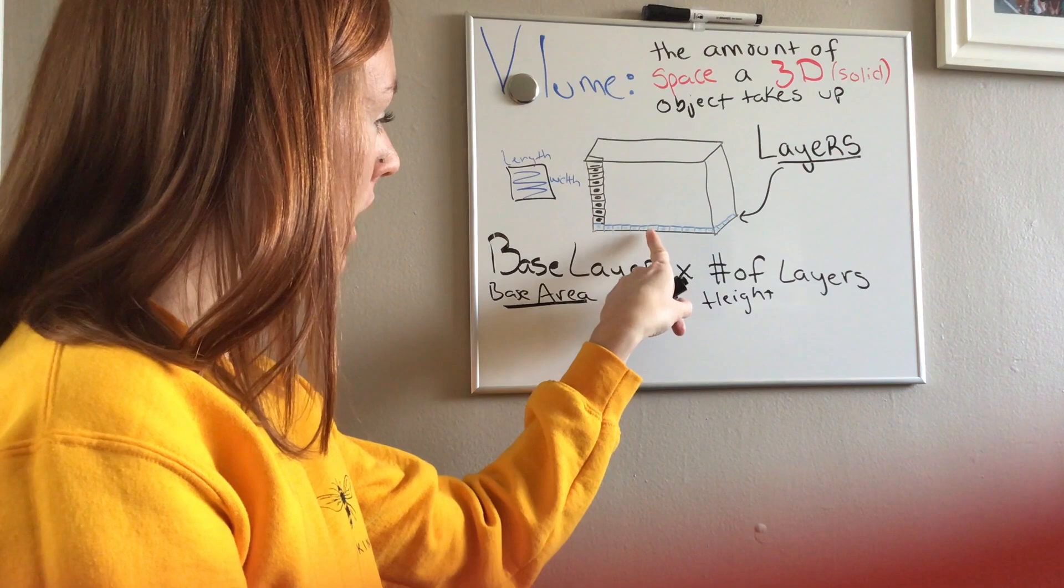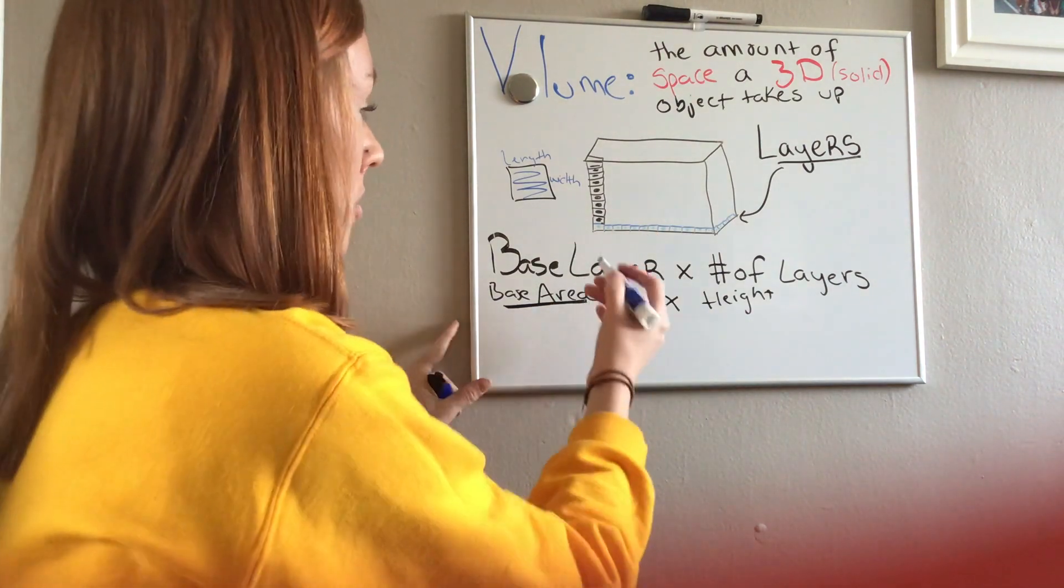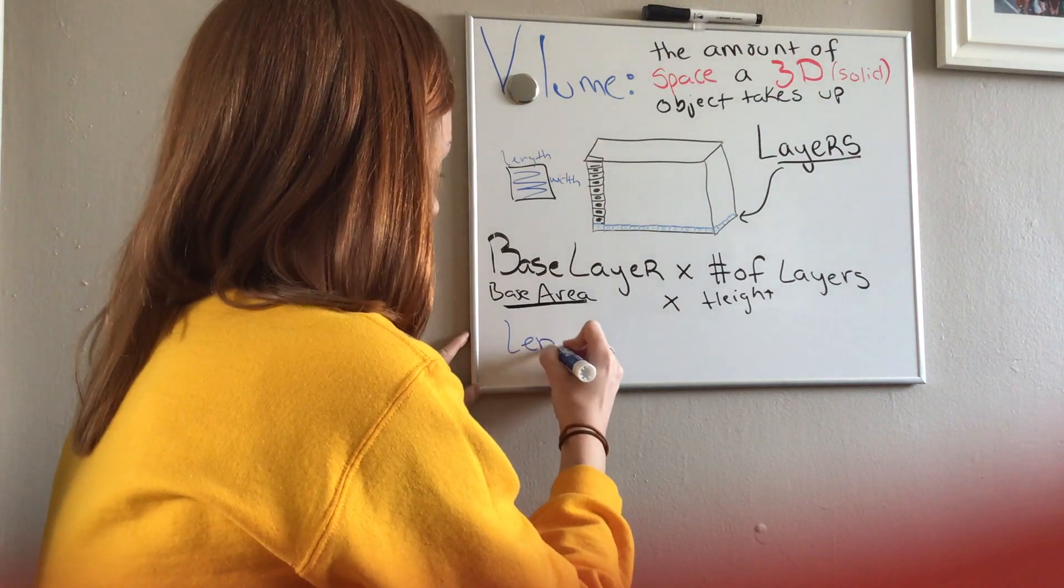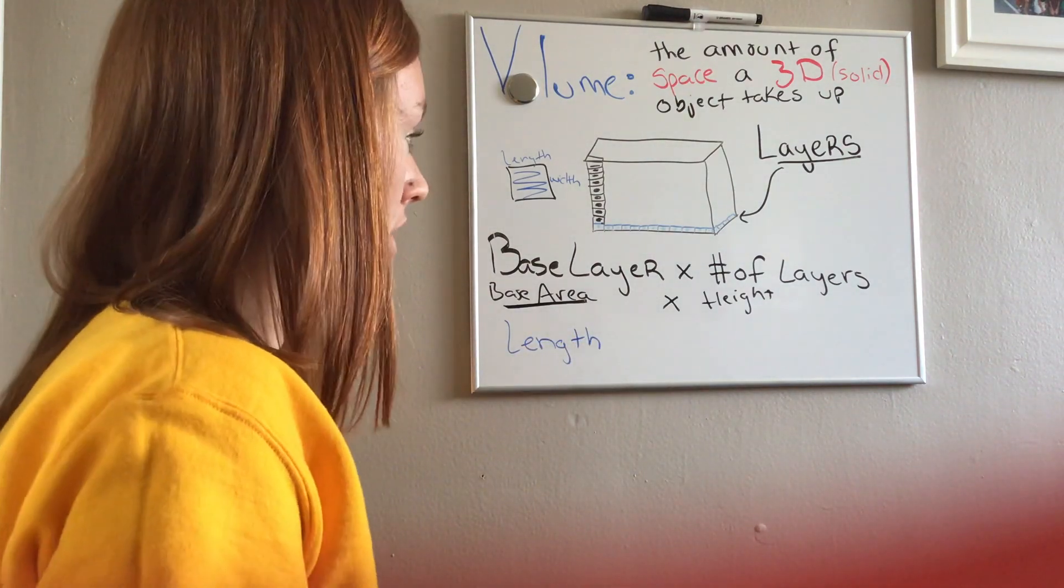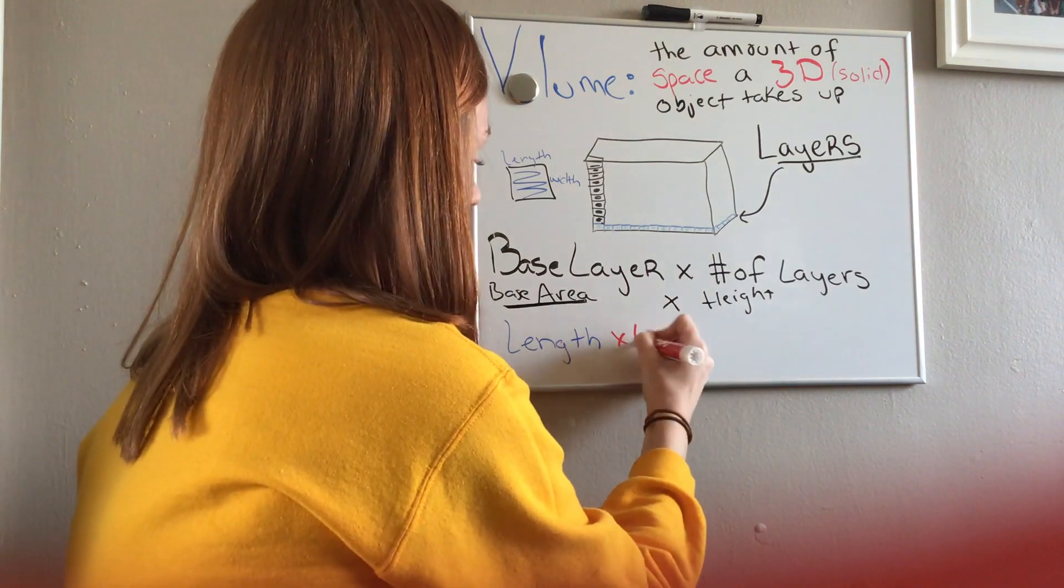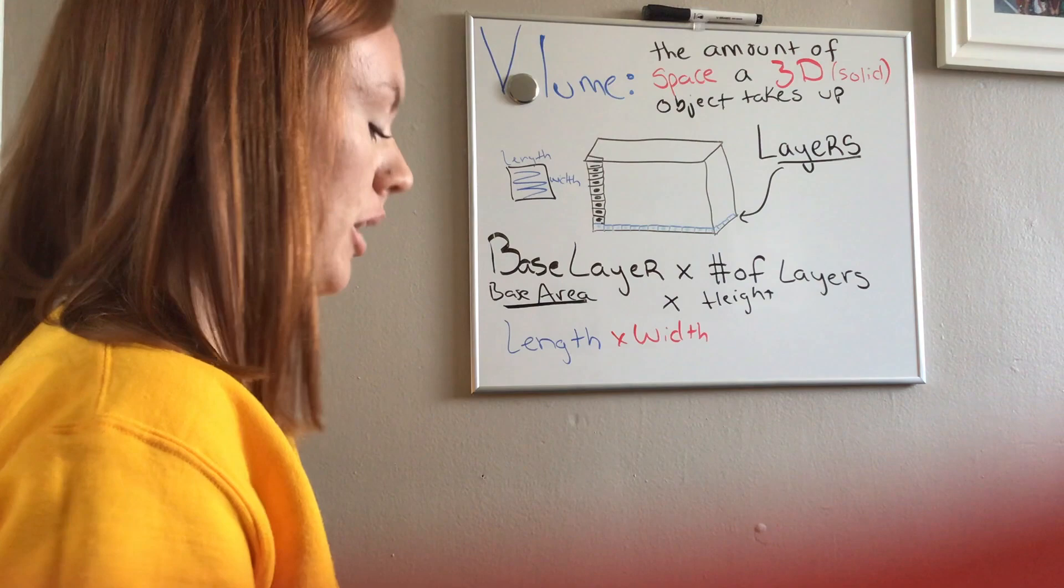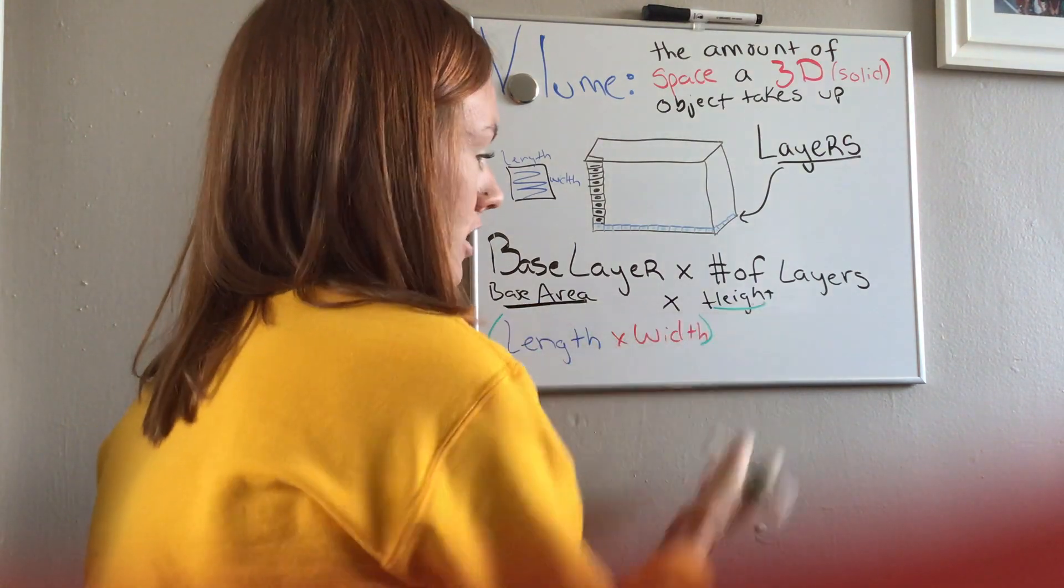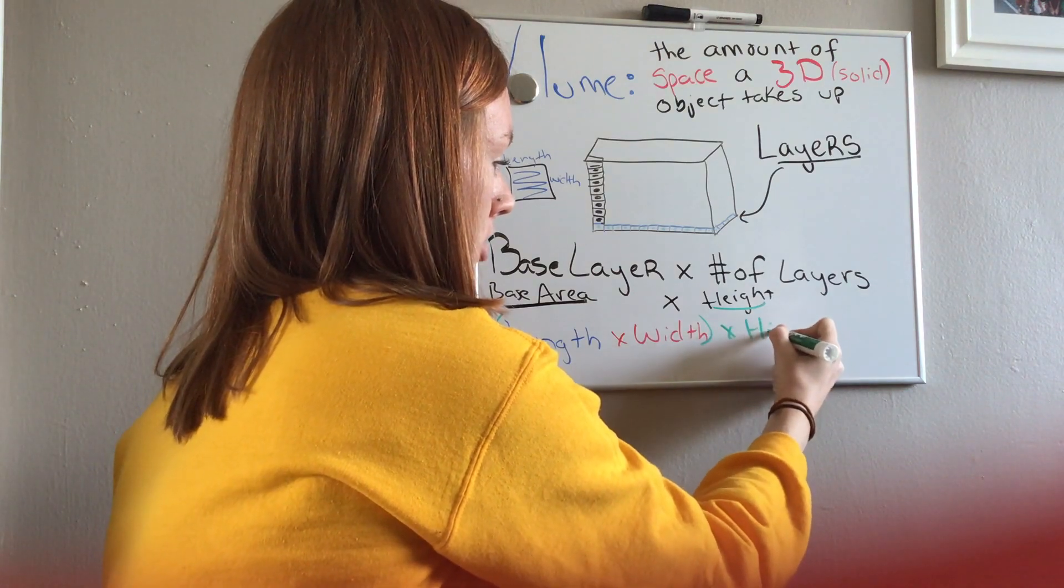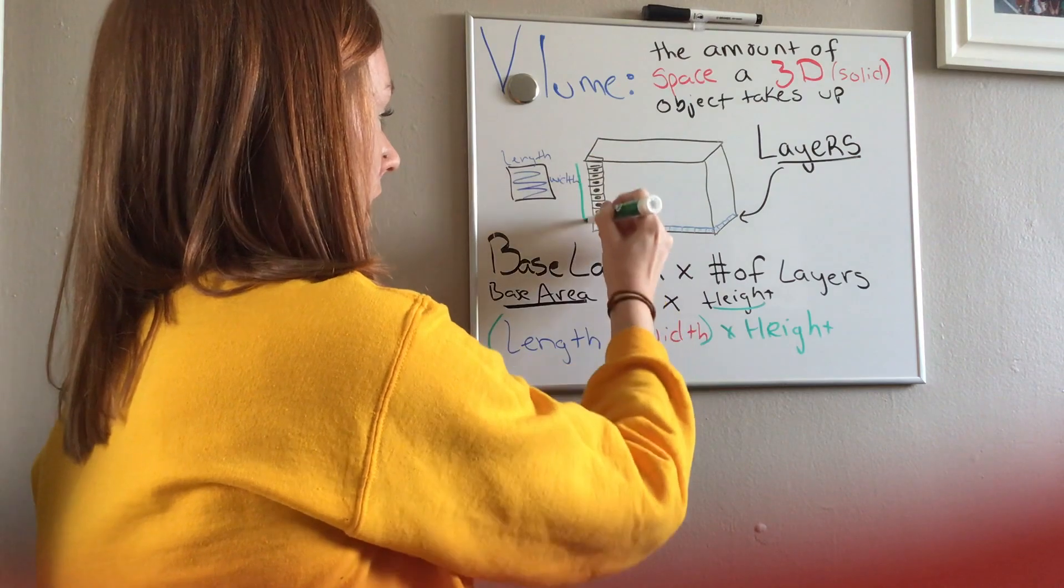So to figure out the base layer and the base area, I'm going to multiply the length times the width times the height.